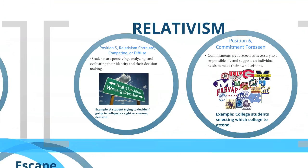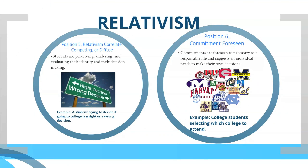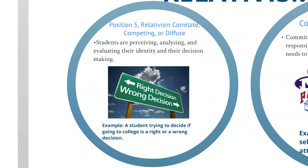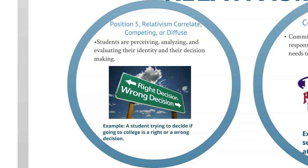The next position is relativism. Position five is relativism correlate, competing, or diffuse. An example of this is a student trying to decide if going to college is the right decision or the wrong decision for them.